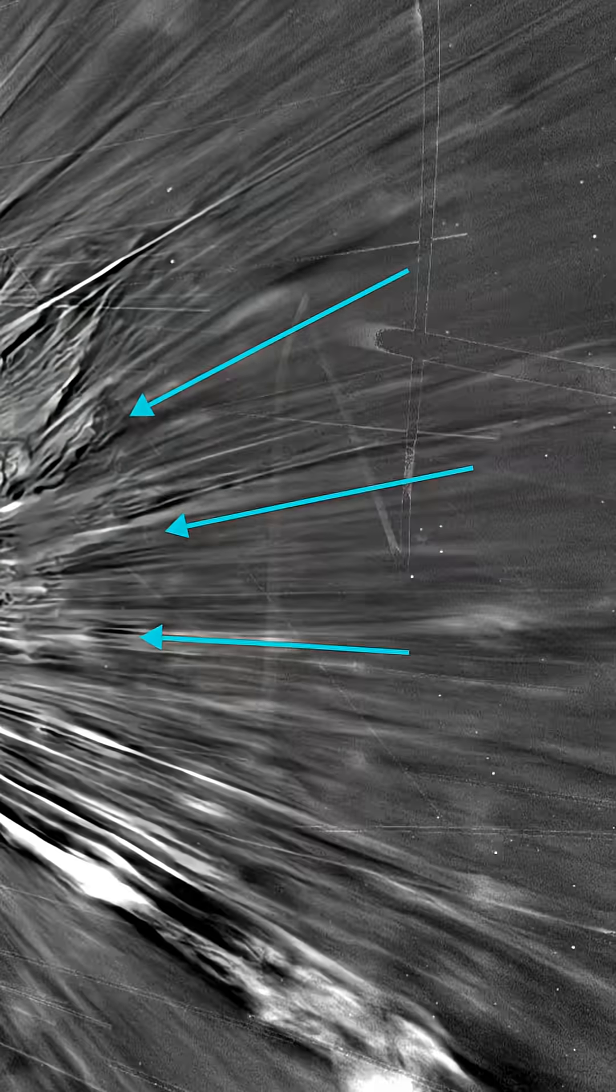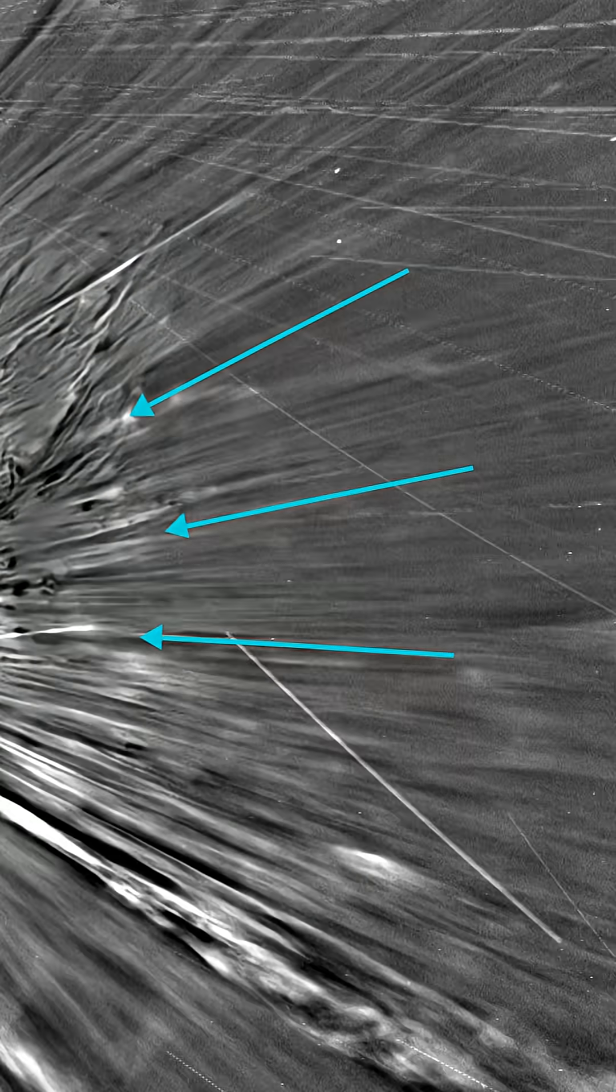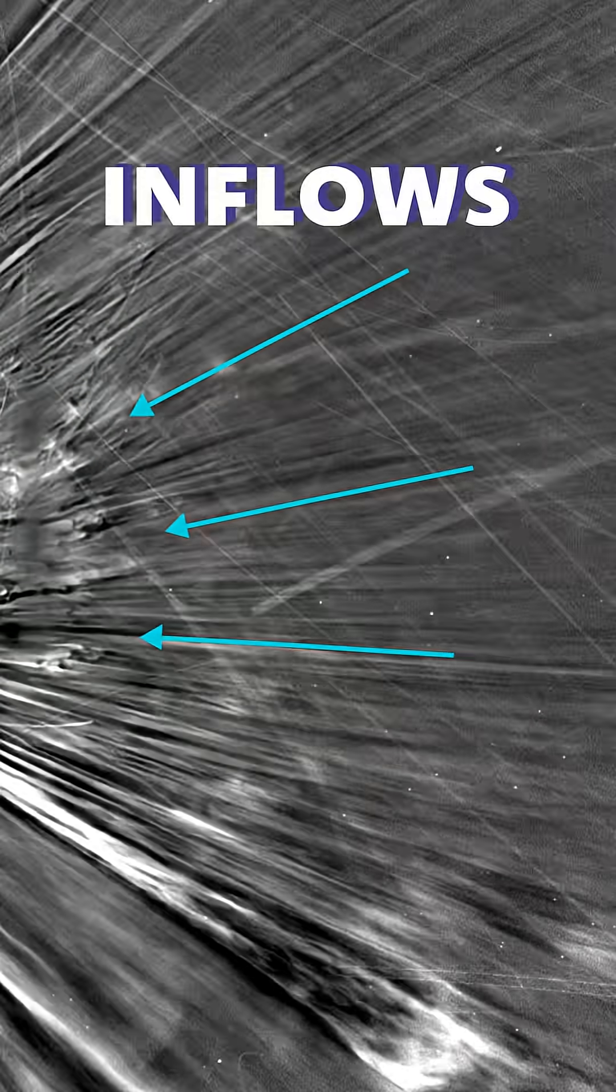But if we zoom in, we can see some solar material returning back to the sun. These unusual features are known as inflows.